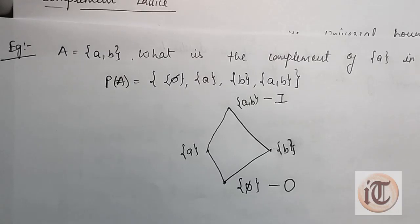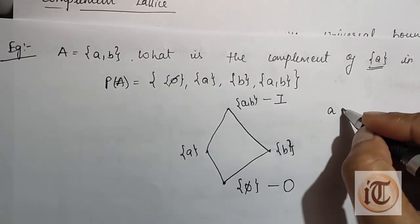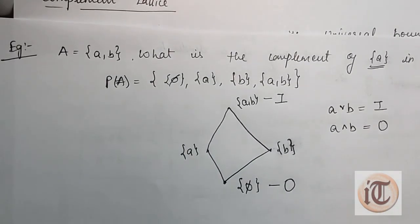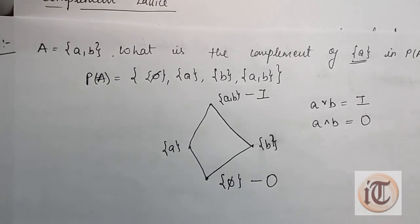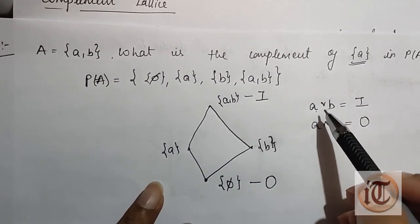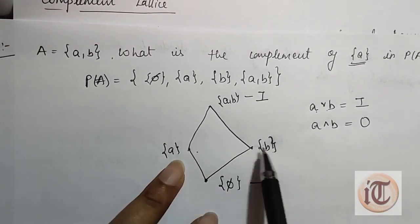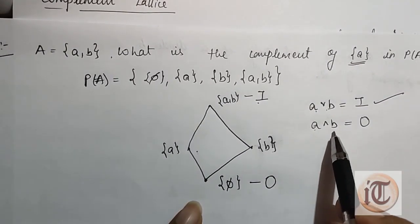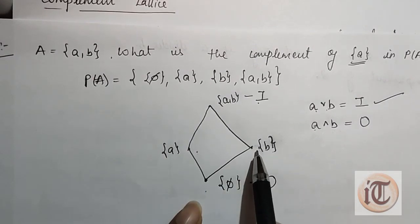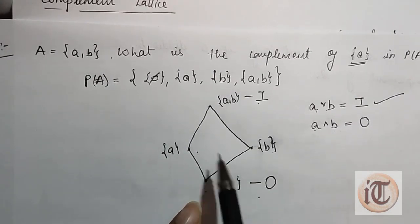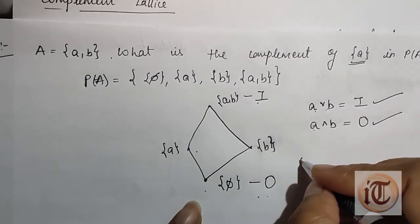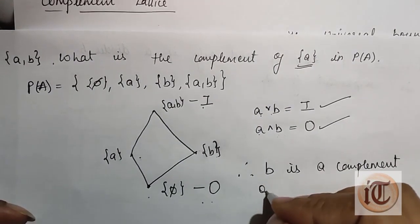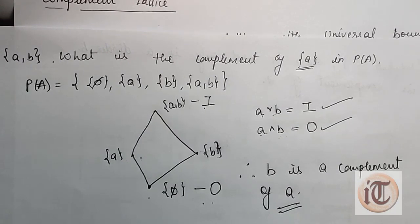Now we determine the complement of element {a}. We check: is the LUB of {a} and {b} equal to i, and is the GLB of {a} and {b} equal to o? The least upper bound of {a} and {b} is {a, b}, which is i — condition satisfied. The greatest lower bound of {a} and {b} is φ, which is o — condition satisfied. Therefore, {b} is a complement of {a}, and by commutativity, {a} is also a complement of {b}.